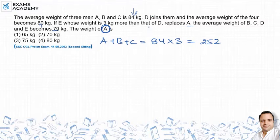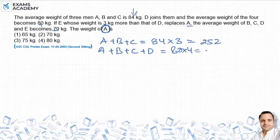ABC में D जुड़ जाता है और उनका average weight हो जाता है 80. इसका मतलब A, B, C और D का जो sum आएगा वो कितना आएगा? यह आएगा 80 into 4, that is 320.